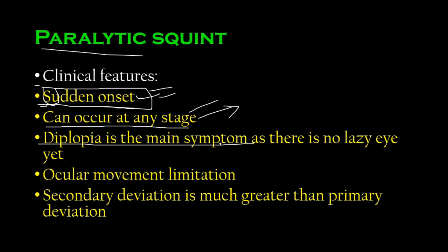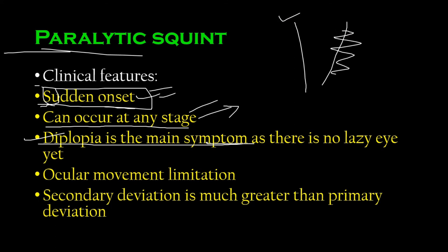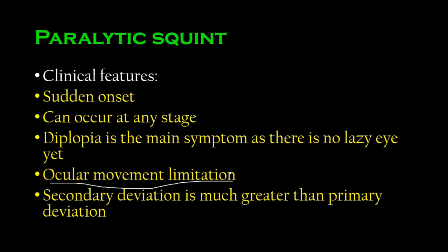Compare that to non-paralytic squint, which is usually congenital or infantile. Paralytic squint can occur in a 30-year-old and appears suddenly. Diplopia is the main symptom of paralytic squint — very high yield. In non-paralytic squint there was very little diplopia because of the development of lazy eye, but that does not happen here, at least not in the beginning. There is also ocular movement limitation because the extraocular muscles are affected.